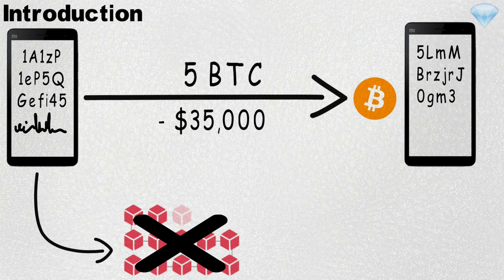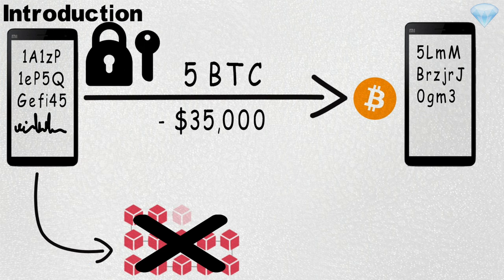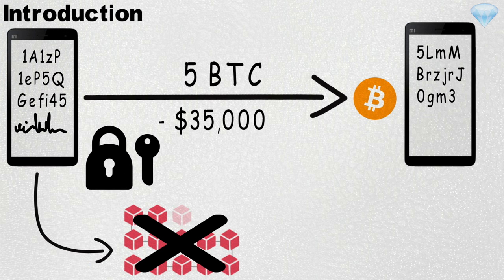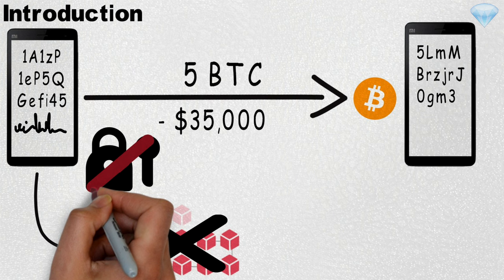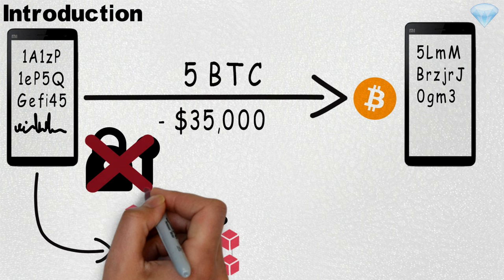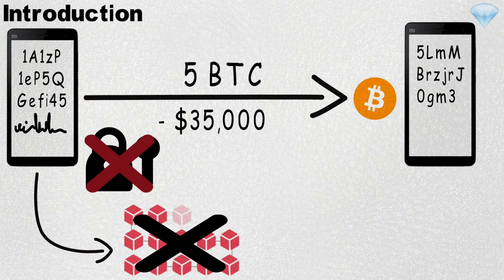By adding a digital signature, you can prove that you know the private key that corresponds to that address. If you do not know the corresponding private keys, then you probably should not have been telling people to send Bitcoin to you via that address, since you are unable to spend any of those Bitcoins.